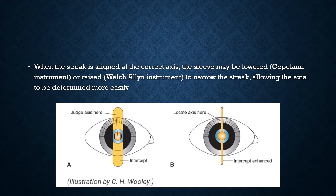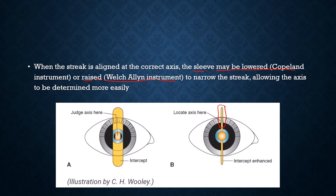After finding a rough estimate of the principal axis using BITS, you can use the sleeve function on the retinoscope — whether it is a Welch Allyn, Copeland, or Heine instrument — to make the streak as narrow as possible. This narrowness is achieved by putting the sleeve fully down on the Copeland and fully raised on the Welch Allyn. You can then nicely align the narrow streak using a trial frame or protractor to easily locate the correct principal axis.